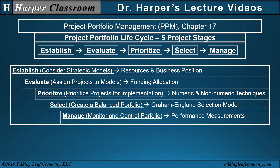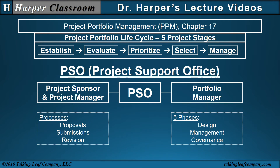This lifecycle defines a structure of five stages within which to manage a portfolio. But in addition to the structure, Wysocki correctly points out the need for management support, which is contained in the PSO, the project support office. The PSO can support the project sponsor and project manager through the processes of project proposals, project submissions, and revisions. The PSO can support the portfolio manager in the five phases of designing the phases, management of the phases, and governance of the phases. So the PSO can be a key resource for the effective application and ultimate success of the project portfolio lifecycle within an organization.